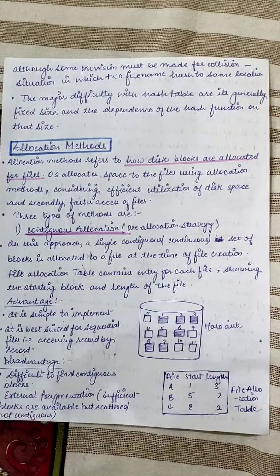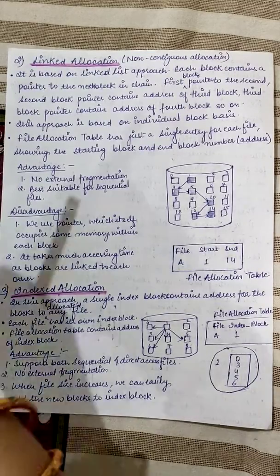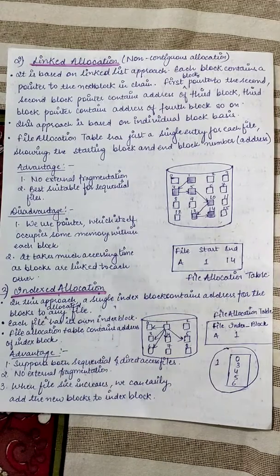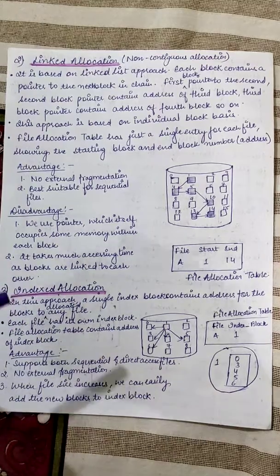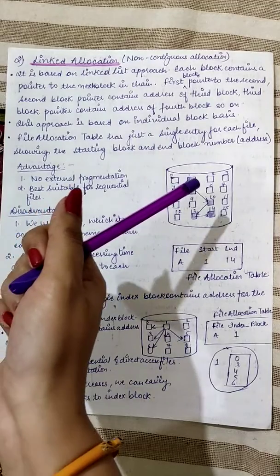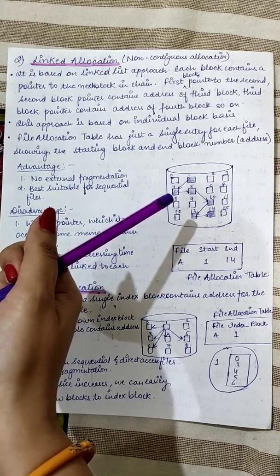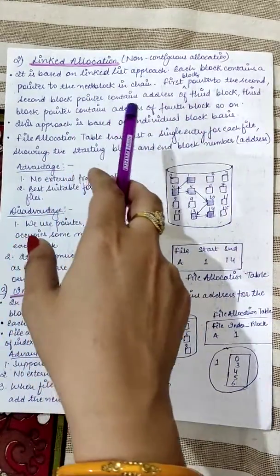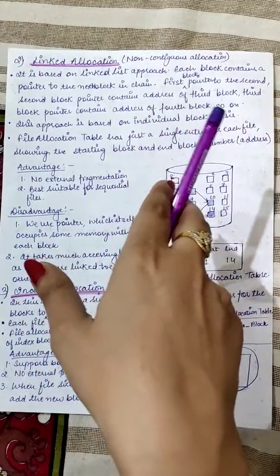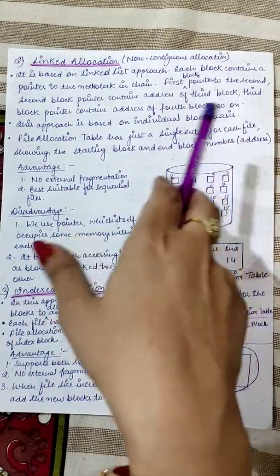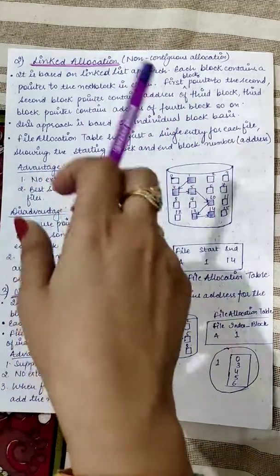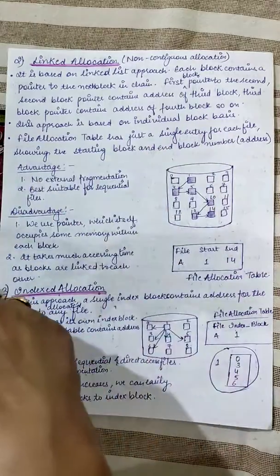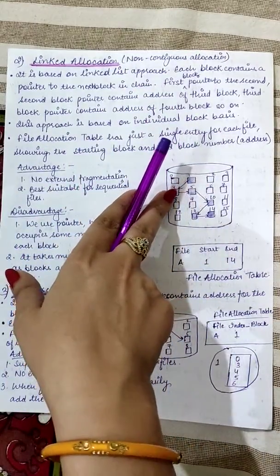Next is linked allocation, which is a non-contiguous allocation — you are not looking for a continuous set of blocks. It uses a linked list approach where blocks point to the next block. Each block contains a pointer to the next block in the chain: the first block points to the second, the second to the third, and so on. This approach works on an individual block basis.